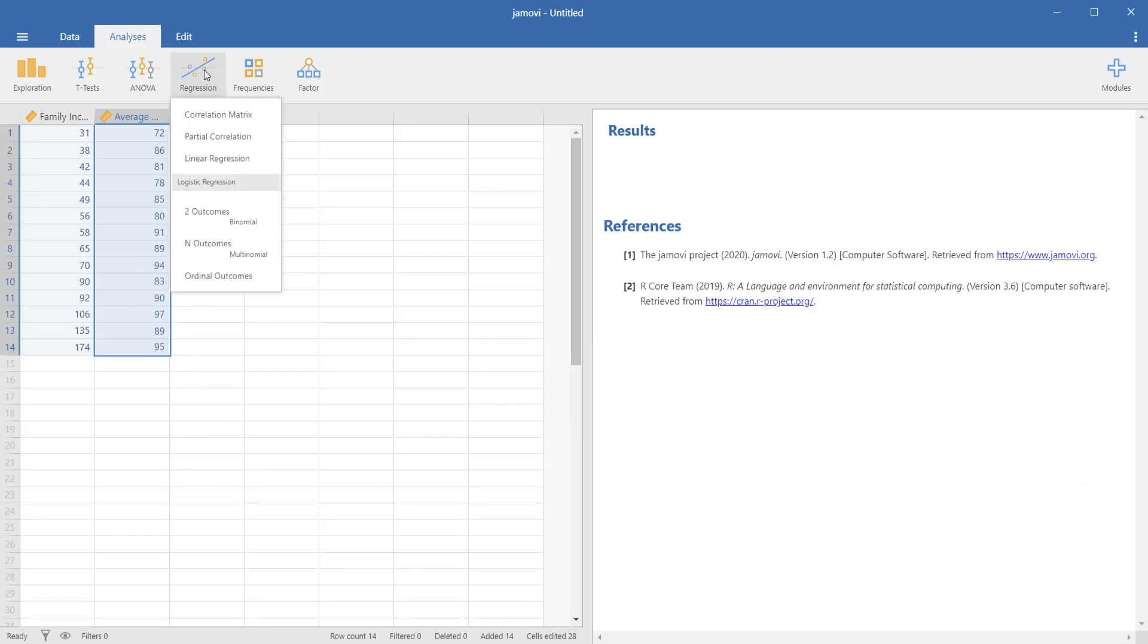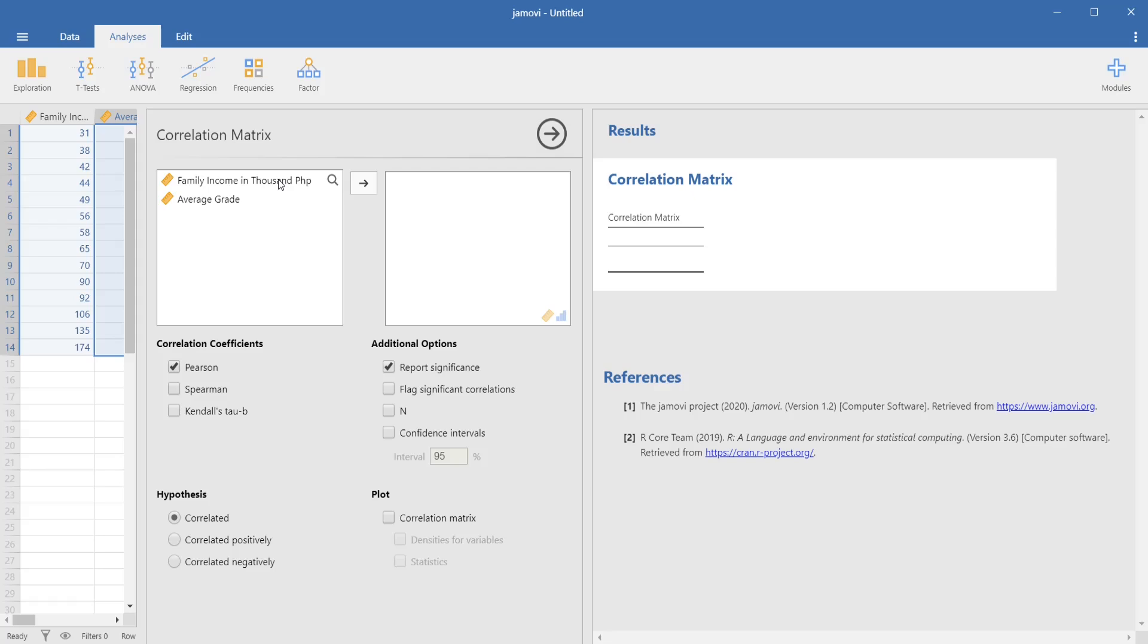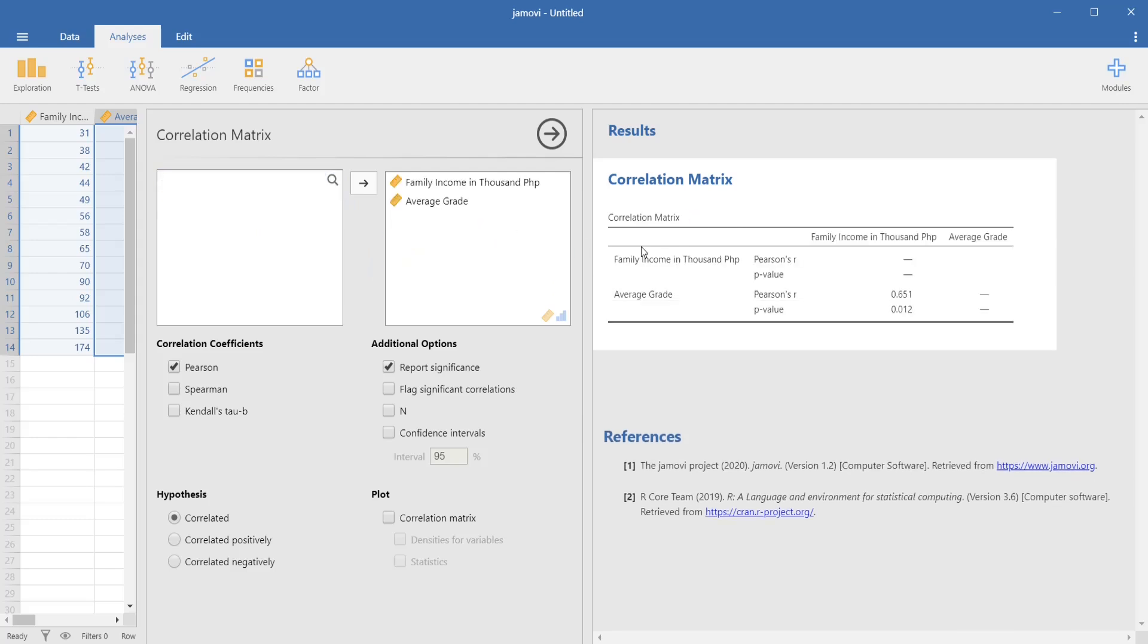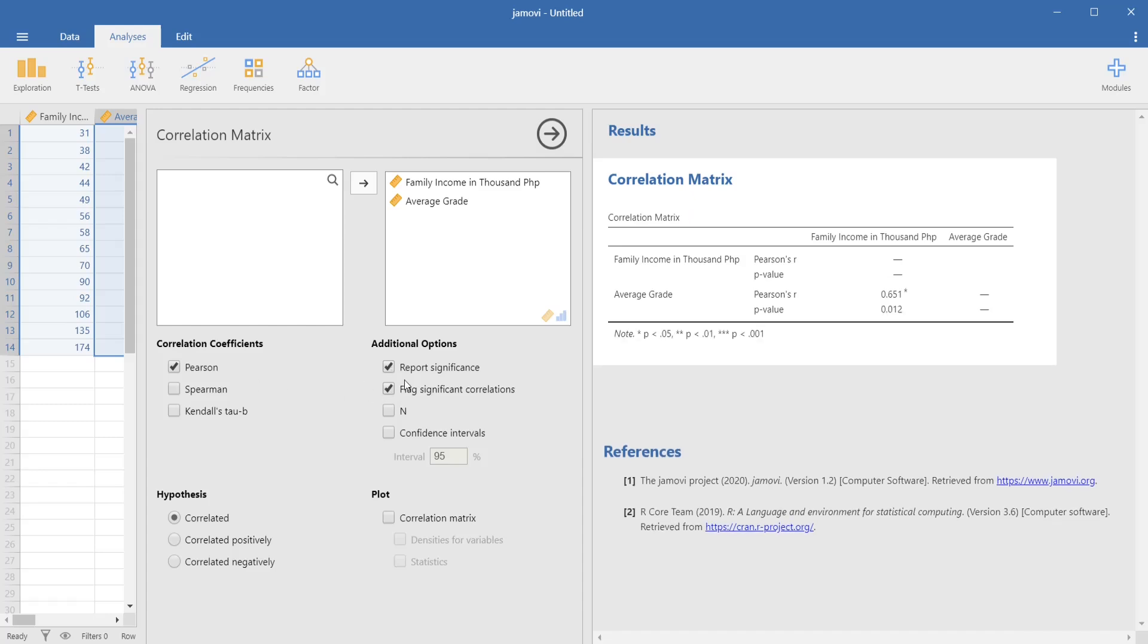Click on regression. Then, select correlation. Here on the pop-up screen, make sure to click on both variables. Then, drag them from left going to right. And then, let the computer run the analysis. We can check report significance. We can check flag significant correlations. And the type of correlation is Pearson. Spearman is used when you are correlating ranks or ordinal data. Now, our hypothesis is that they are correlated. You can also choose correlated positively. But I will discuss the implications of this in another lecture.